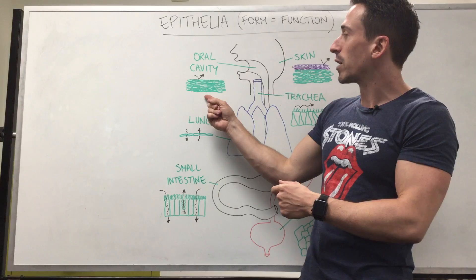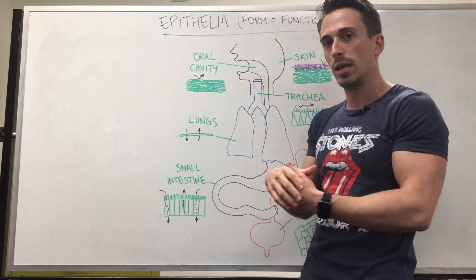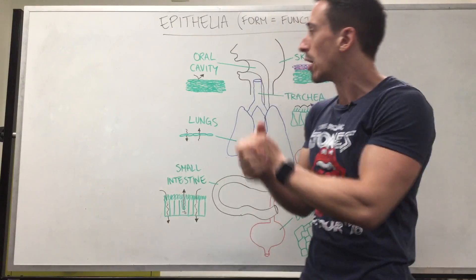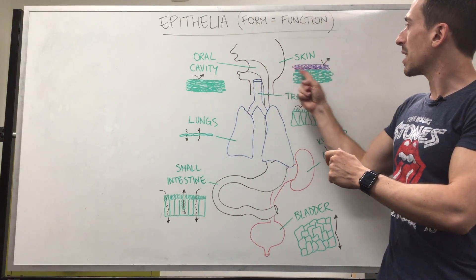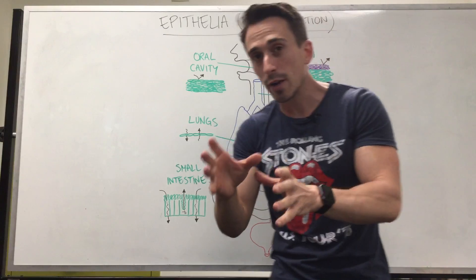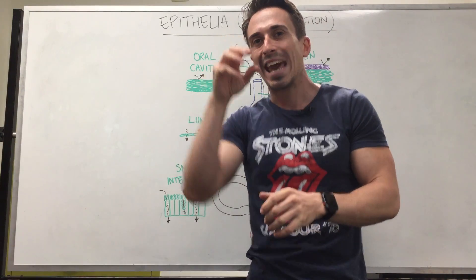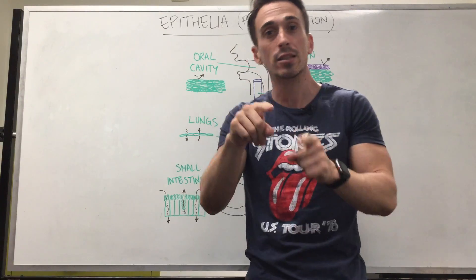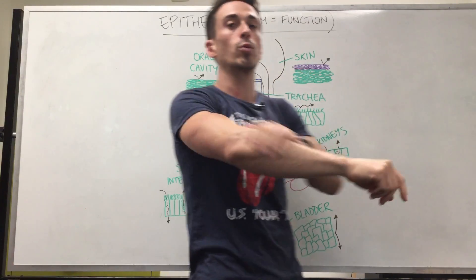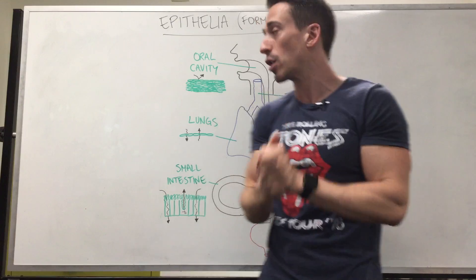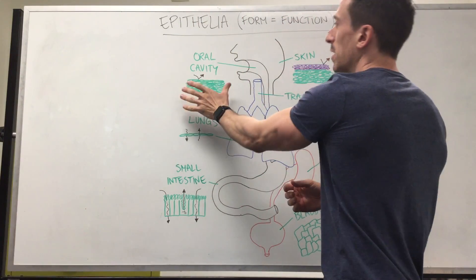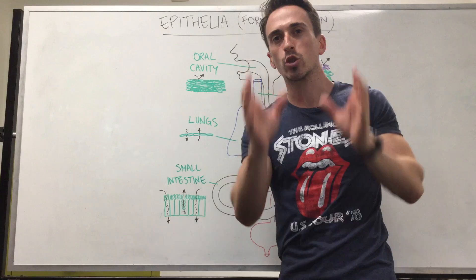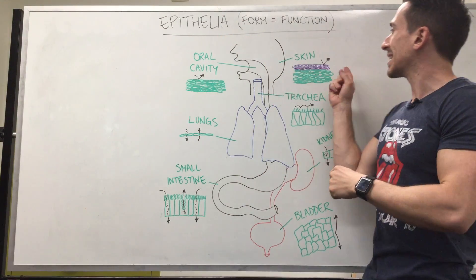We have stratified squamous cells in the oral cavity and stratified squamous cells in our skin. The difference is that one has an additional layer of stratified epithelia that's keratinized, meaning it has a protein inside that's waterproof. That's going to be our skin, because we want skin to be waterproof. So both the oral cavity and skin have stratified squamous epithelia — it's just that the skin's version is keratinized.